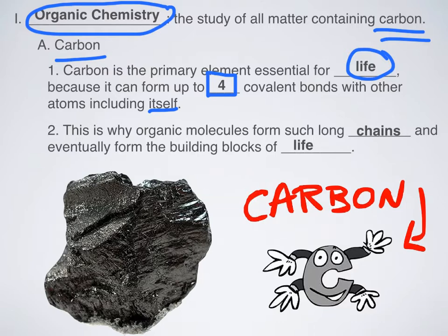Carbon can bond to four more carbon atoms. So every time you have a carbon atom in a larger molecule, you can end up with an even larger molecule, by chemical reactions that cause carbon-to-carbon bonds. This is one of the reasons why organic molecules tend to form such long chains, and why living things are an array of different carbon-containing compounds all linked up together.